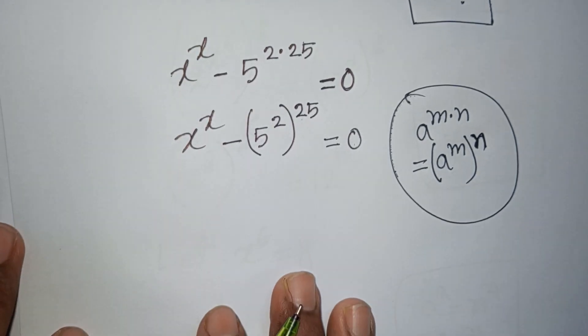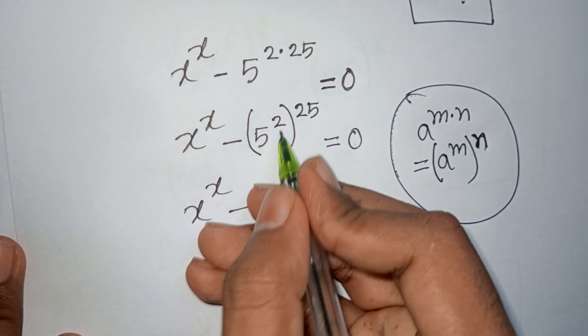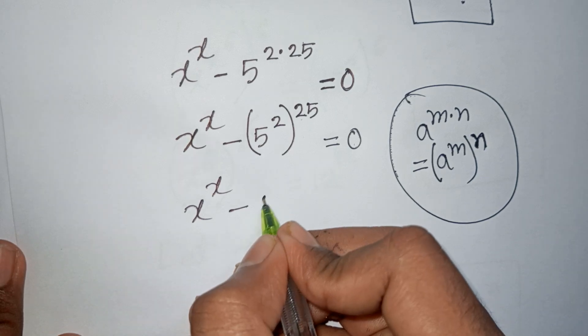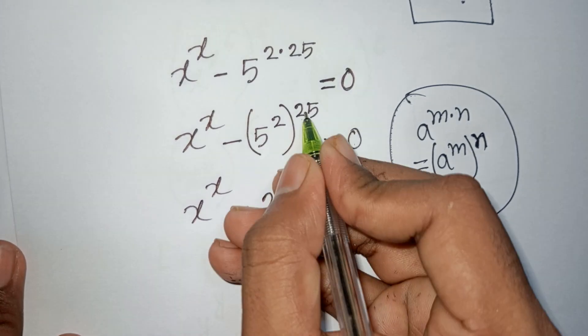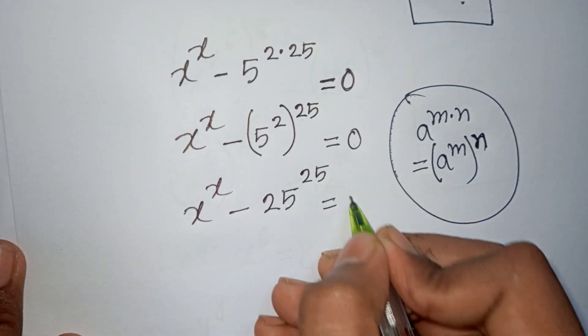Now we have x^x - (5^2)^25 = 0. Since 5^2 = 25, this becomes x^x - 25^25 = 0.